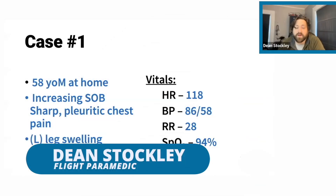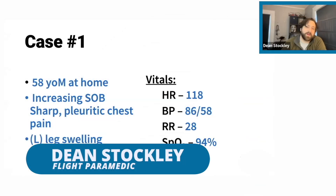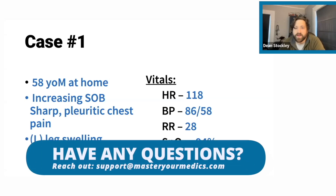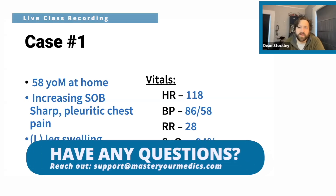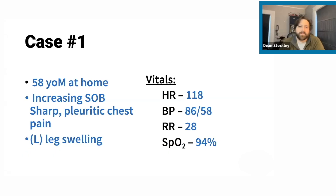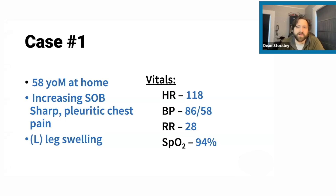We've got a 58-year-old male found at home. He's had 12 hours of increasing shortness of breath, and then about an hour of really sharp pleuritic chest pain. The shortness of breath worsens significantly with exertion. The chest pain gets far worse with deep inspiration, which is what pleuritic chest pain means. He's also had left leg swelling over the last 24 hours, and he recently was on a flight from Europe to the US. His vitals: heart rate 118, blood pressure 86/58, respiratory rate 28, SpO2 94%. Everything else is fine.